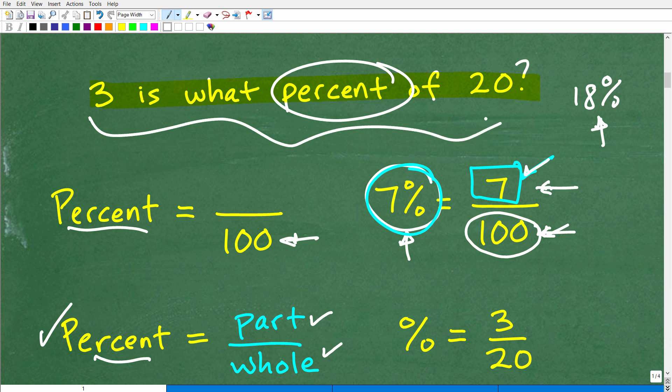So in this particular problem, we want to know what 3 is what percent of 20. So what part of 3 out of 20, what is the percent? Okay, so this would be the part and 20 would be the whole. So we could say, all right, 3 over 20, this is the part and 20 would be the whole. So that can also get us the percent. We can also determine the percent.